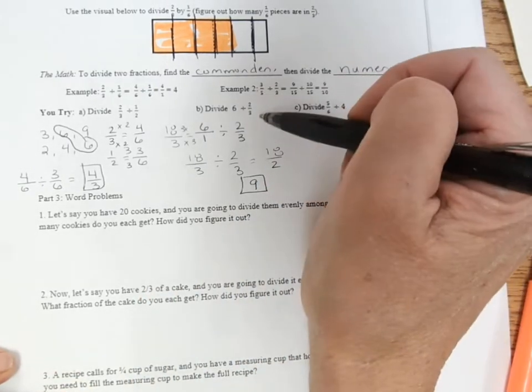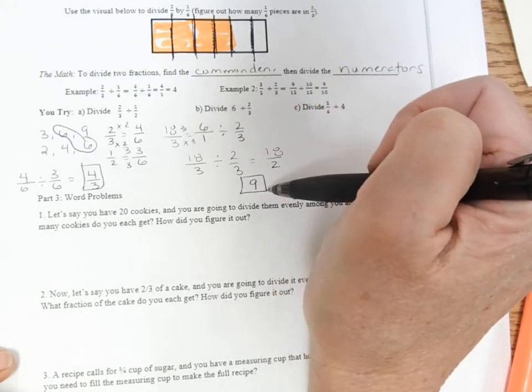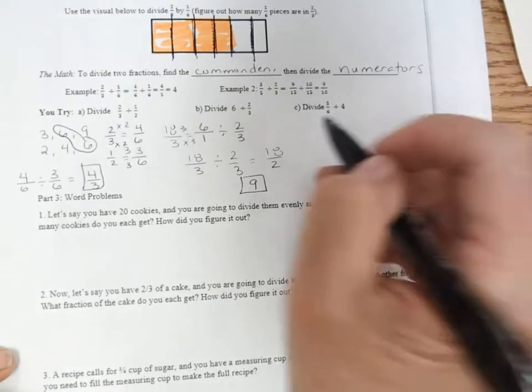So six divided by two-thirds. So the question we're asking is, how many groups of two-thirds are there in six? There are nine groups of two-thirds.